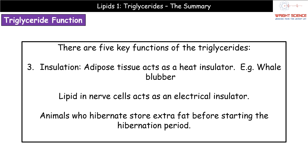Number three on our list of functions is insulation. Triglycerides act as an insulator in two ways: as a thermal insulator, because adipose tissue can insulate against heat loss - think about blubber on whales living in very cold waters - and also as an electrical insulator for the electrical impulses that travel in our nerve cells. Be specific in your answers: say electrical insulator or thermal insulator, not just 'insulator'. Specificity is key at A-level.